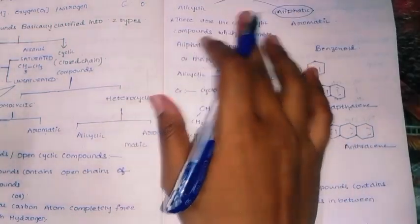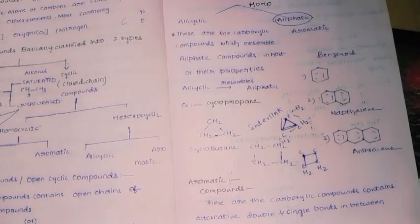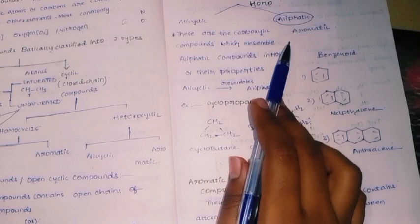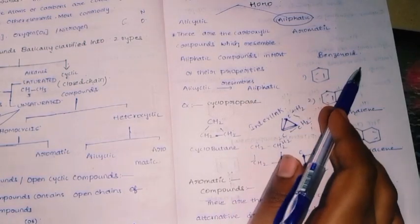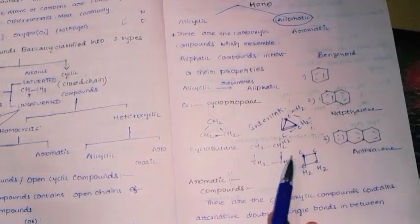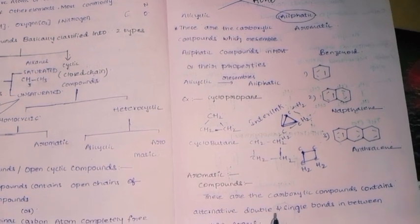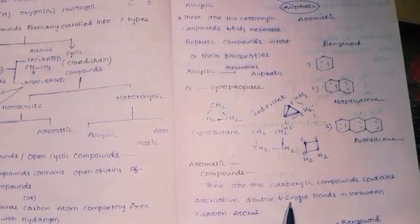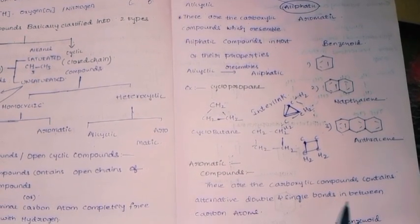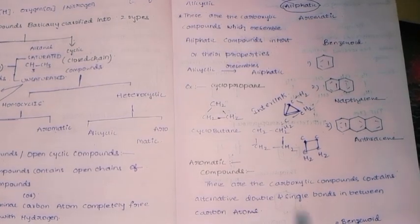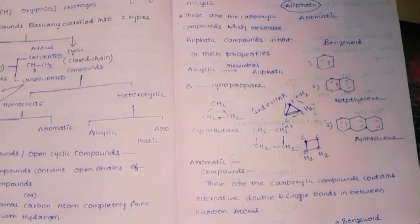Now when it comes to aromatic compounds — we completed alicyclic. Aromatic compounds are carbocyclic compounds that contain alternating single and double bonds between carbon atoms.